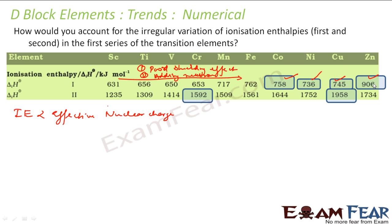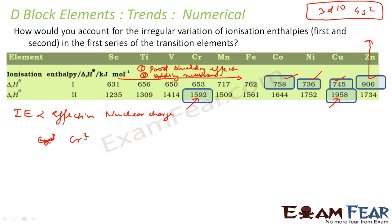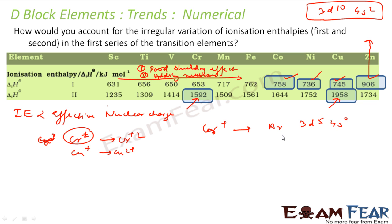For zinc, the electronic configuration 3d10 4s2 is very stable, so zinc has a very high first ionization energy. For the second ionization energy, chromium and copper have very high values. Chromium(+1) has the configuration [Ar] 3d5 4s0 — a half-filled d subshell, which is stable — so it resists losing a second electron, giving high second ionization energy. Ionization energy depends on effective nuclear charge and the extra stability from half-filled or fully-filled electronic configurations.